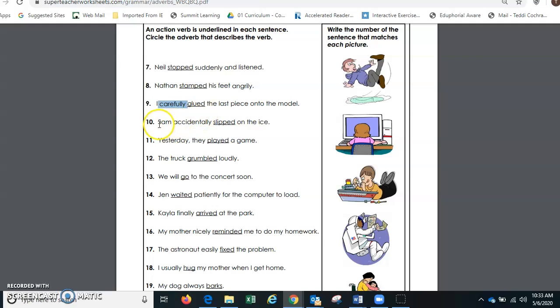Sam accidentally slipped on the ice. How did he slip? Great, accidentally. He didn't do it on purpose and that's usually how we slip. We don't know it's coming, so accidentally slip. And what does this word have? It ends in ly.